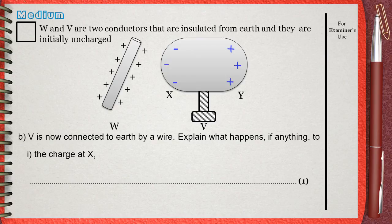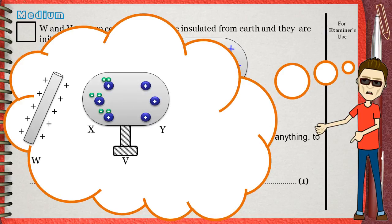Let us understand what happened after you approach the positive rod. This makes the nearer side, which is side X, negatively charged, and leaves side Y positively charged.